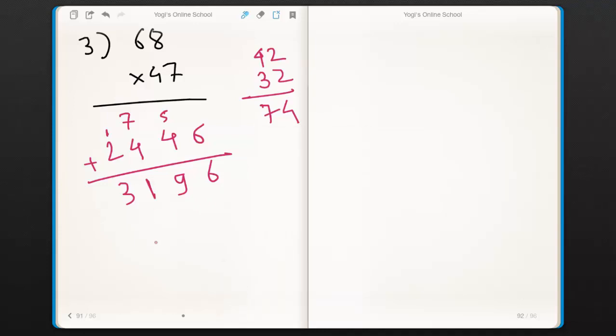If you practice this method, you can get any 2×2 multiplication much faster than our regular method.